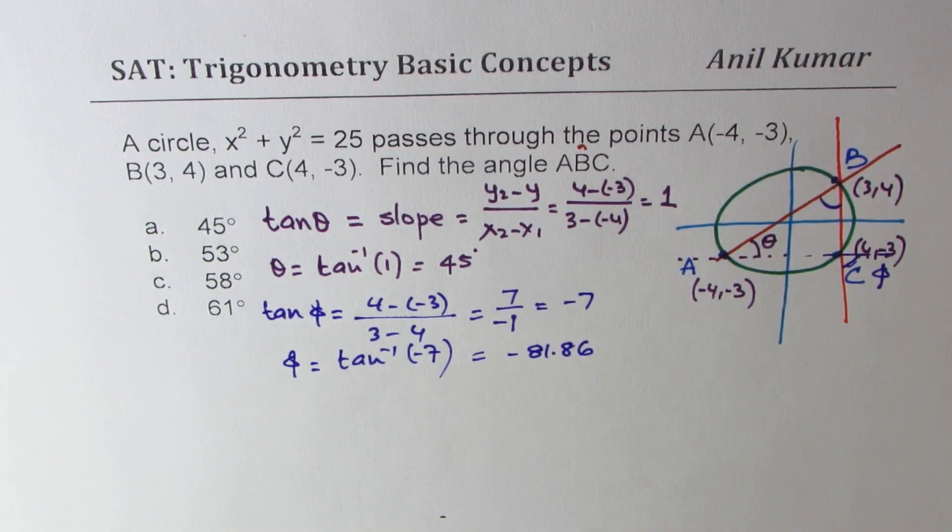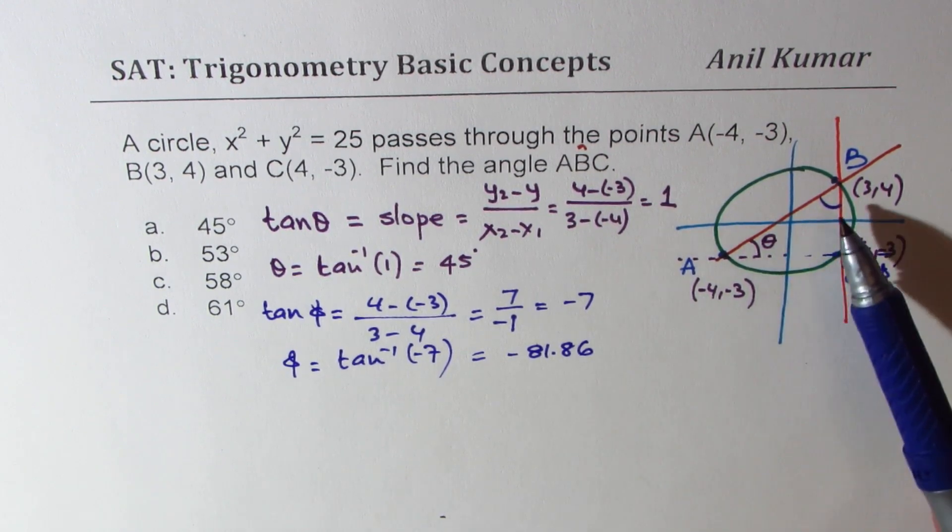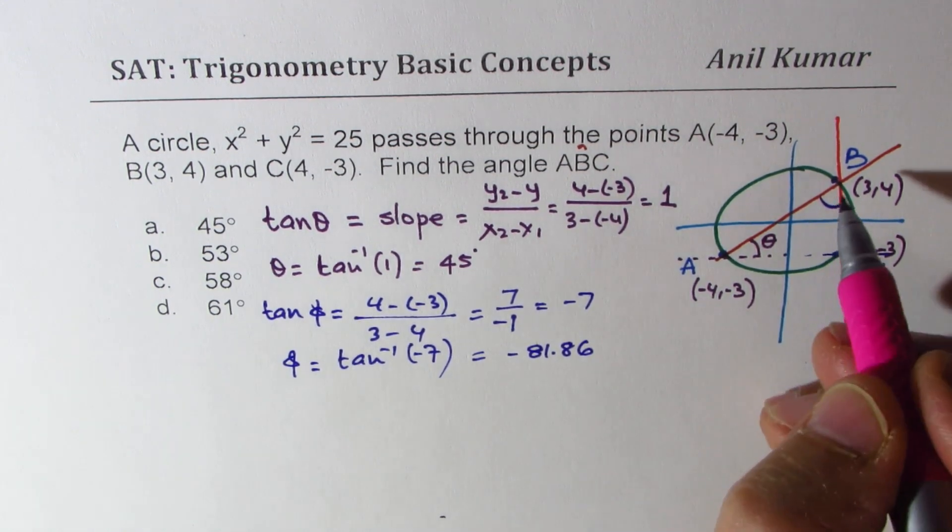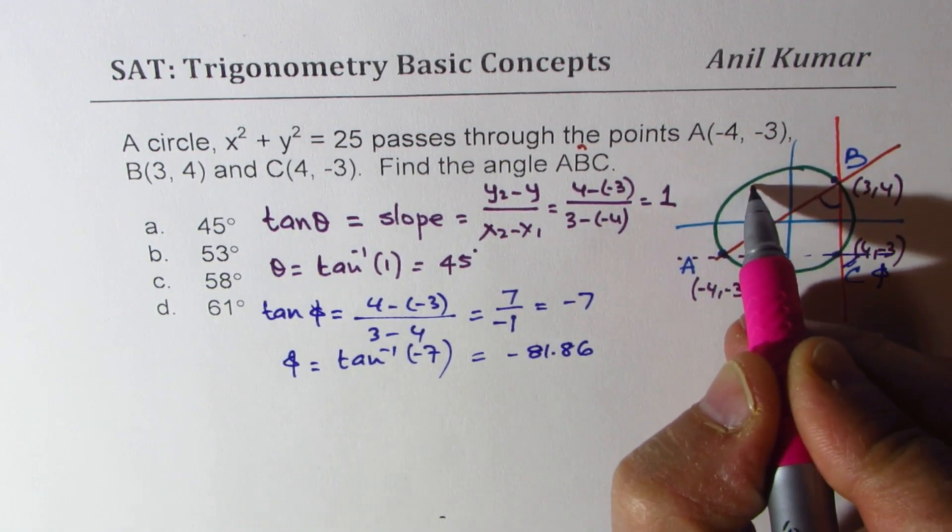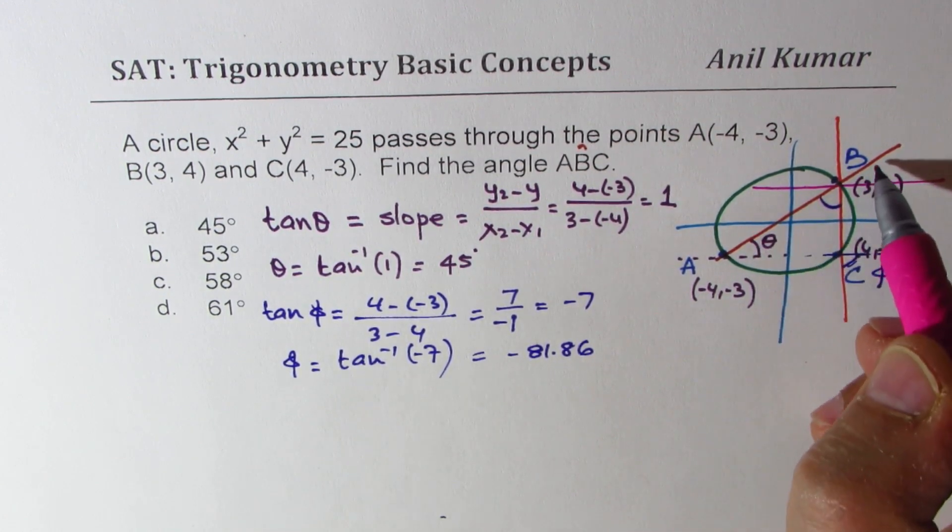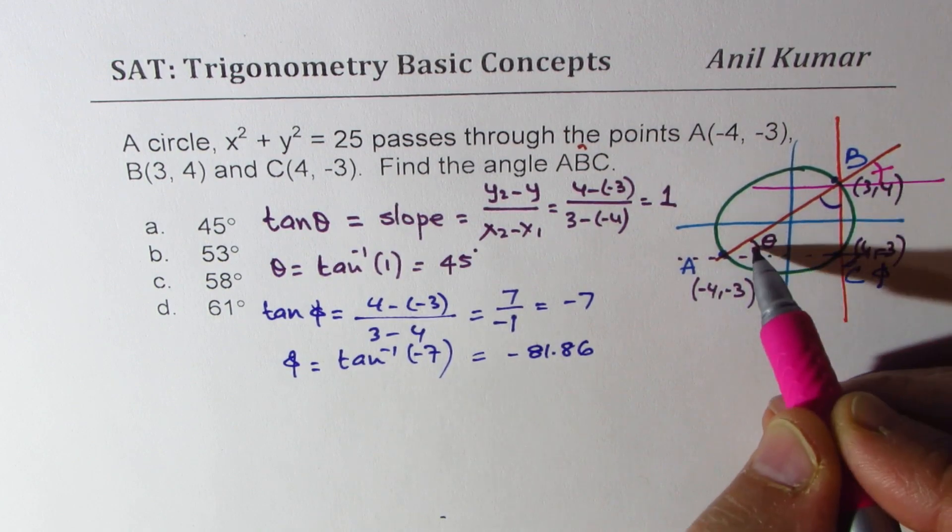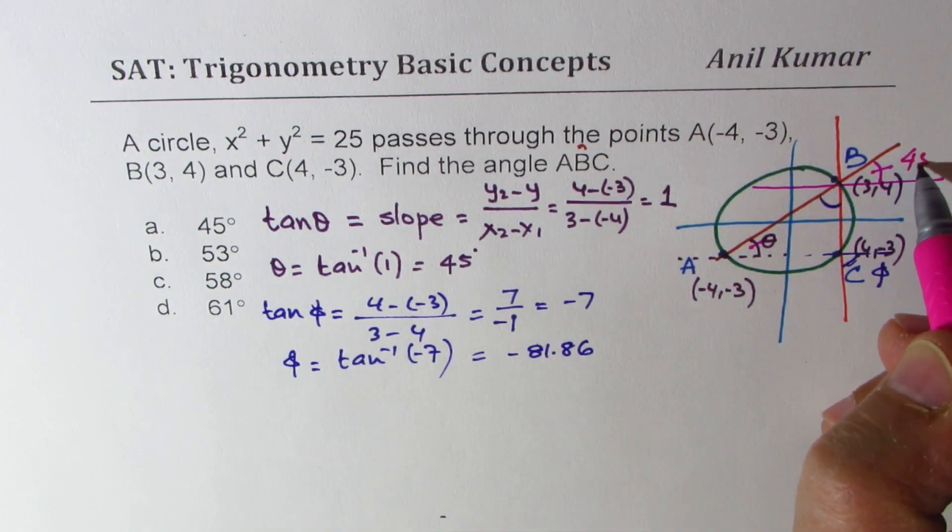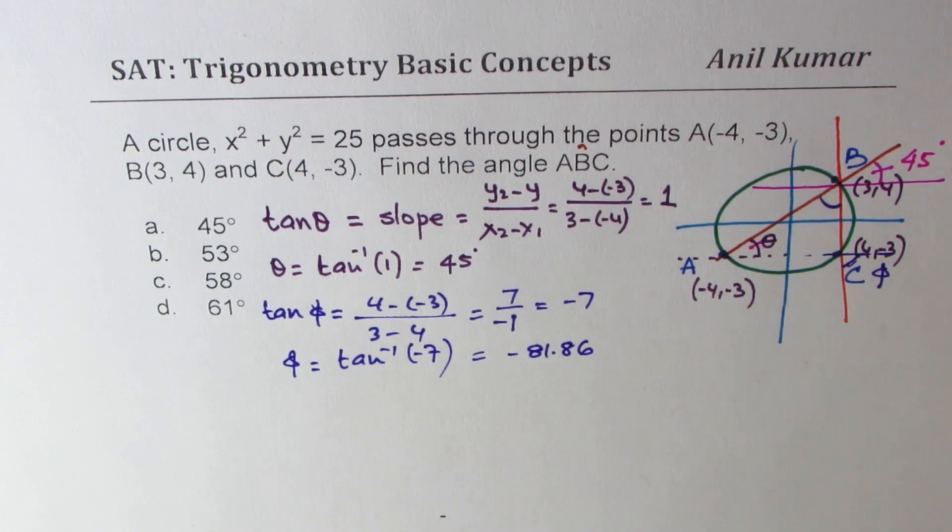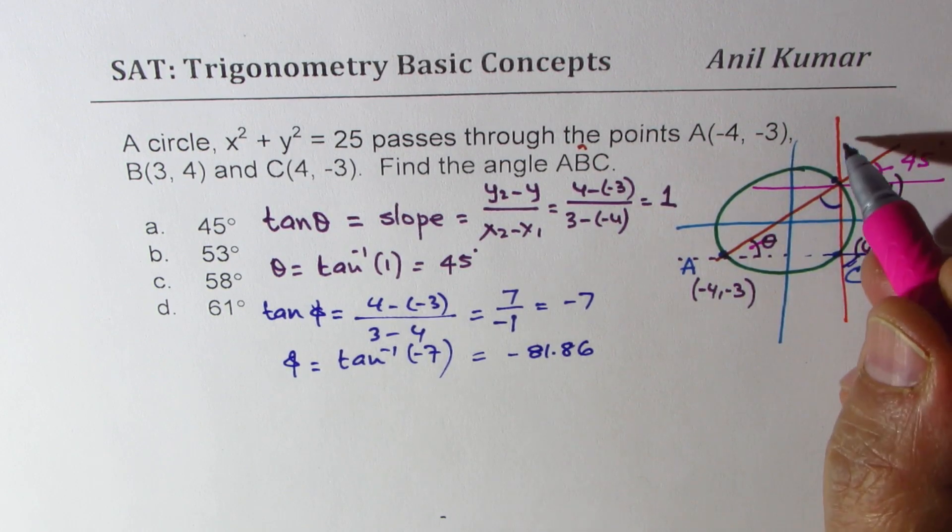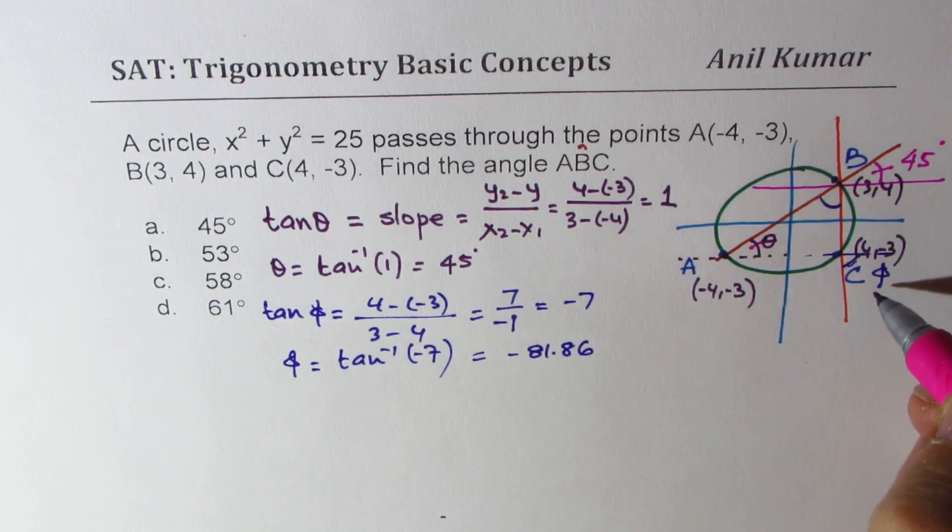Now how do we get the angle required? So the important thing here to find the angle is draw a horizontal line at point B. So if you now compare this is θ, so this is also θ. These two angles are equal and we just found that to be 45 degrees, correct?